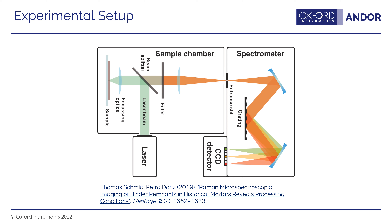After the light goes through the filter, it is focused onto the entrance slit of a spectrometer, where it goes into a focusing mirror, onto a grating where the light is dispersed, onto another focusing mirror where it is focused at a detector — here a CCD detector, which is detecting your light.